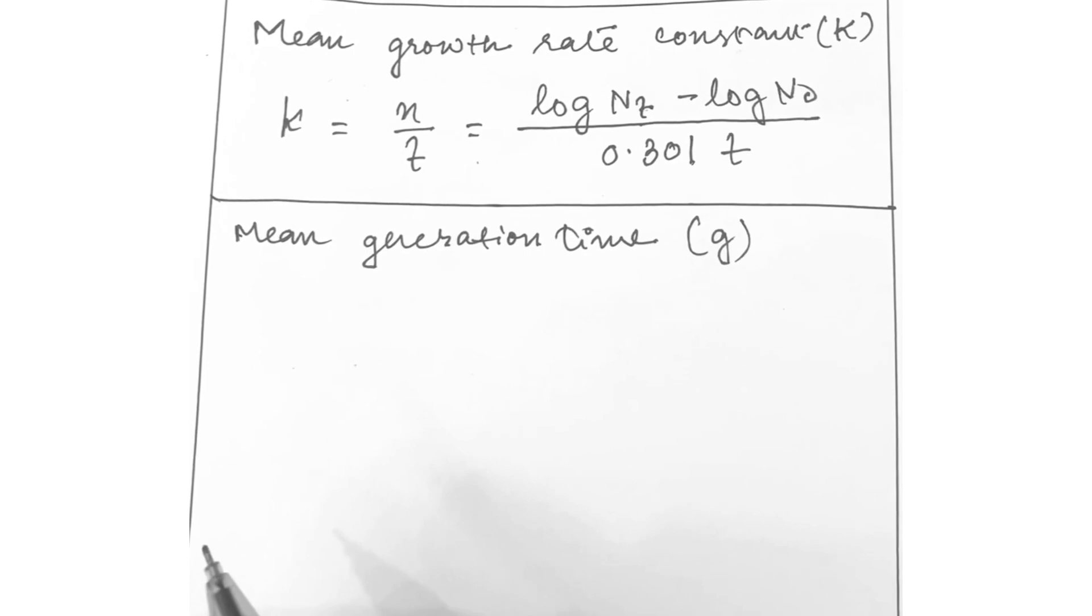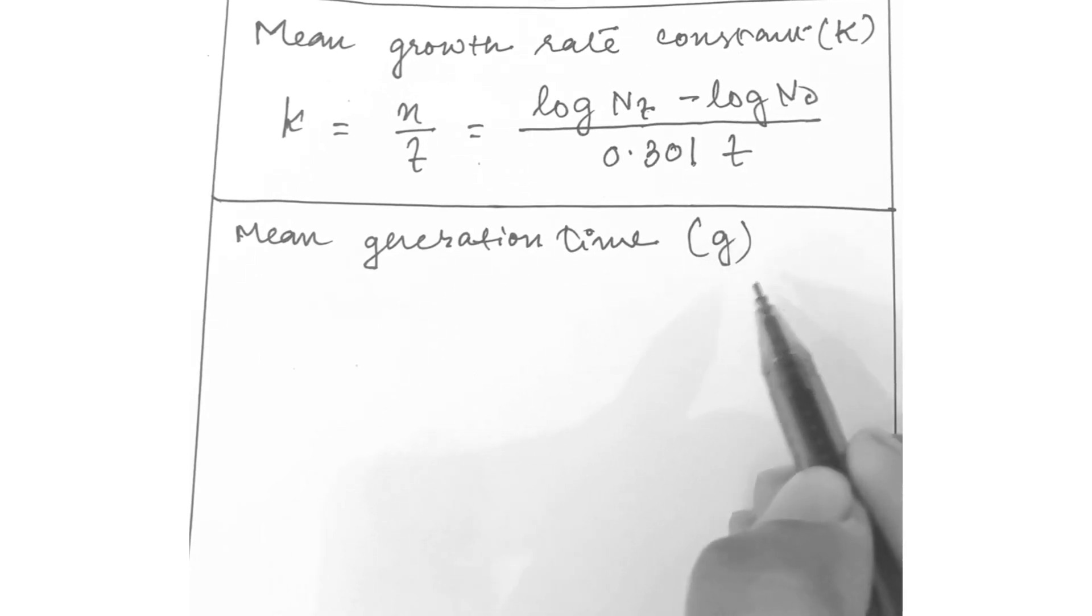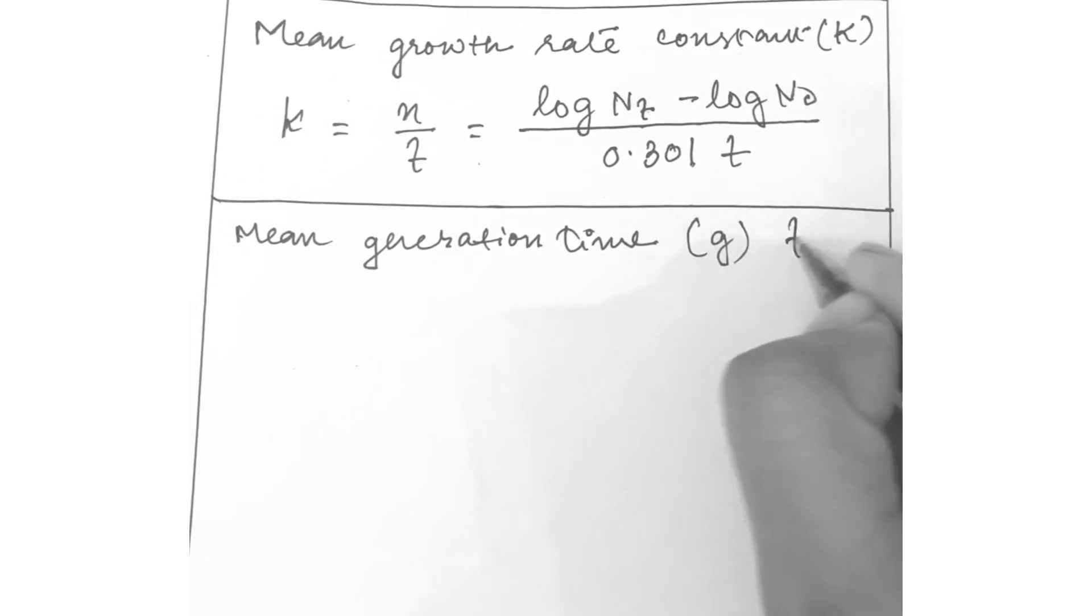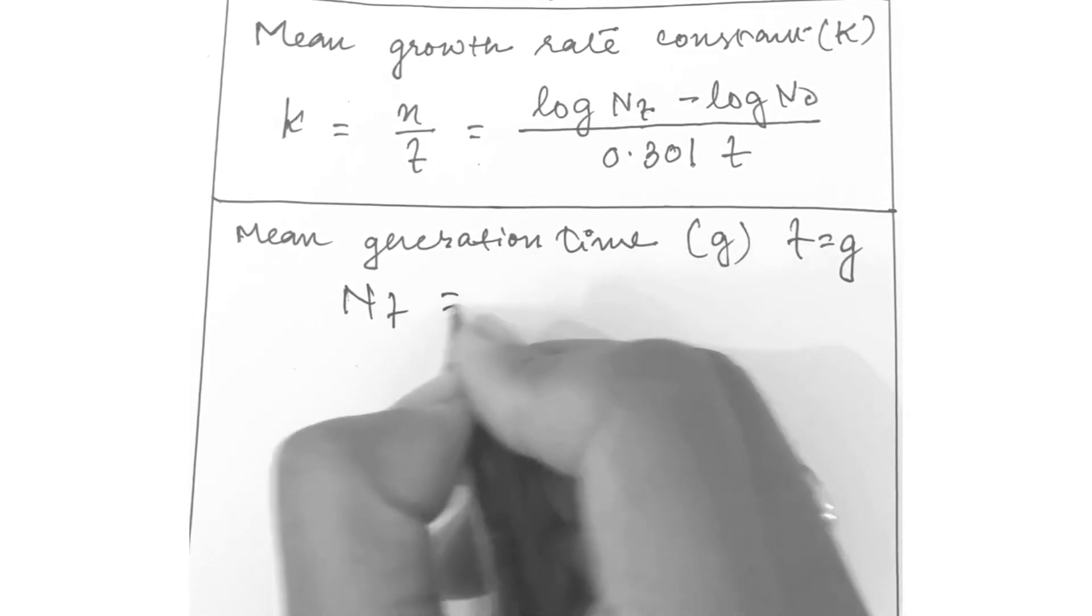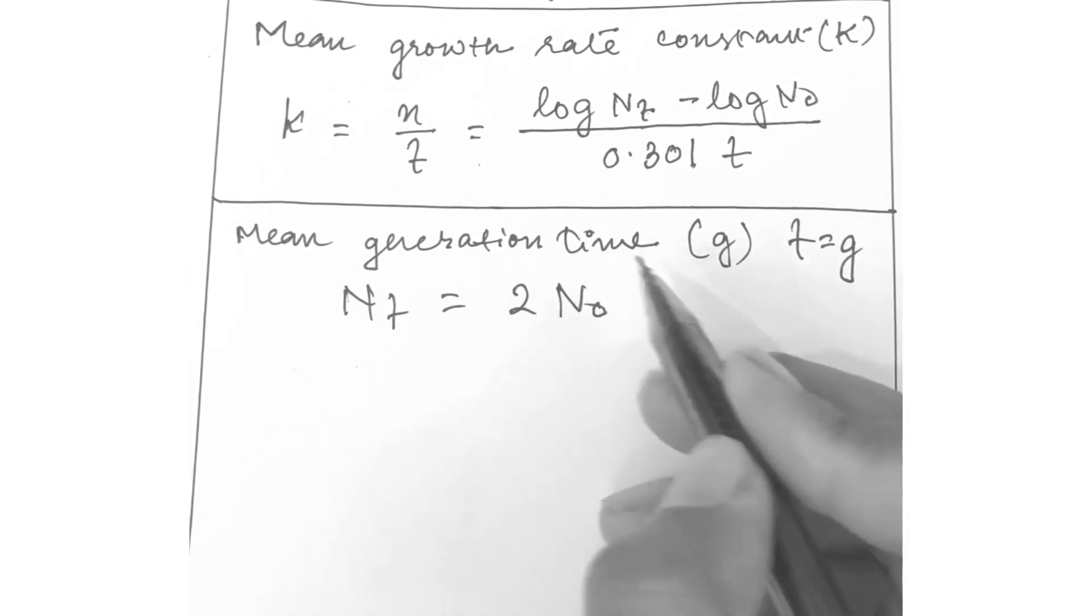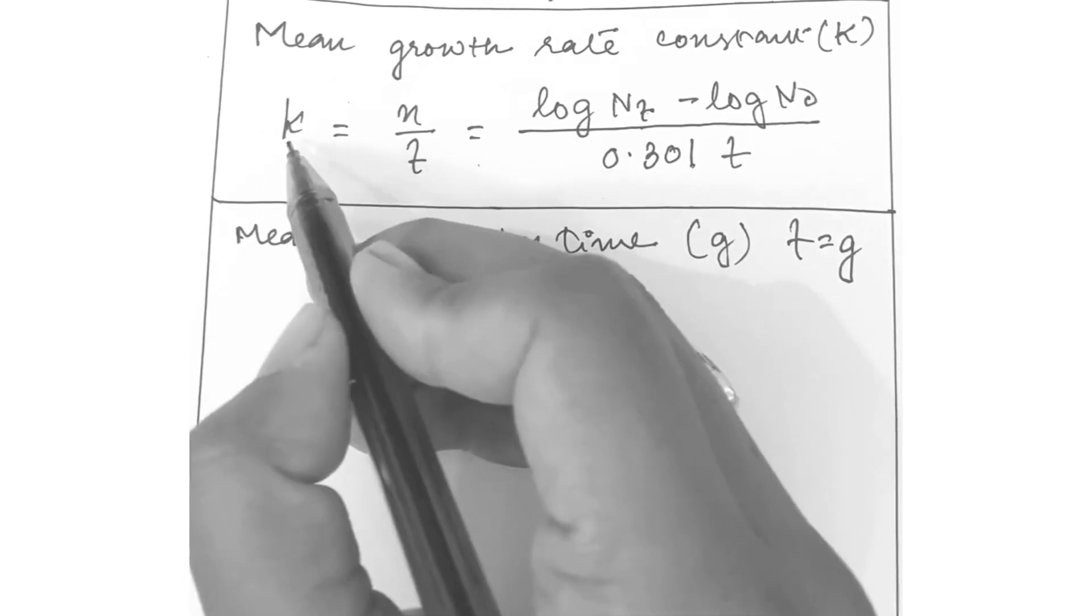The time it takes a population to double in size, that is the mean generation time, which is expressed as g. It also is the mean doubling time. This can now be calculated if the population doubles, then t equals g, then Nt equals 2N0. Now we will substitute 2N0 into the mean growth rate equation above for k.